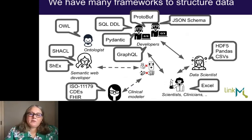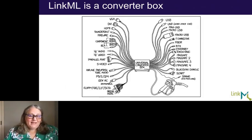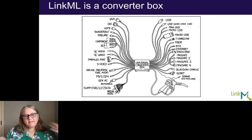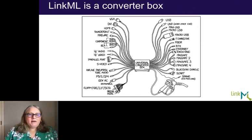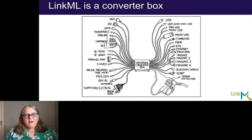We really want tools that lower the learning curve and have people focus on the important work of modeling the data rather than learning the technology that structures it. LinkML is what we like to think of as a universal converter box. What we're trying to do with LinkML is make implicit schemas explicit and be agnostic — or even parasitic — about existing data model frameworks. We use the ones that are out there and fit into the places in our technology stacks with a more explicit model.